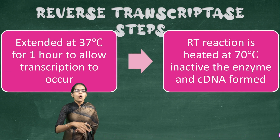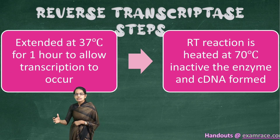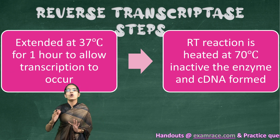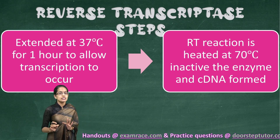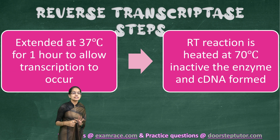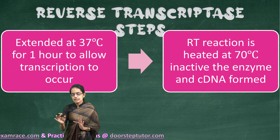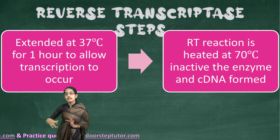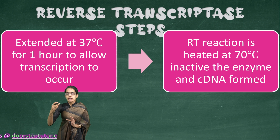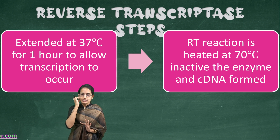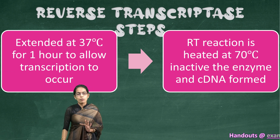Superscript 3 is preferably used up to 50 degrees Celsius because it gives more yield at this temperature. Next, the reaction is extended for around one hour at 37 degrees Celsius so that transcription occurs. Once this is done, the RT reaction is again heated at 70 degrees Celsius, the enzyme is inactivated, and in this process, cDNA is formed.